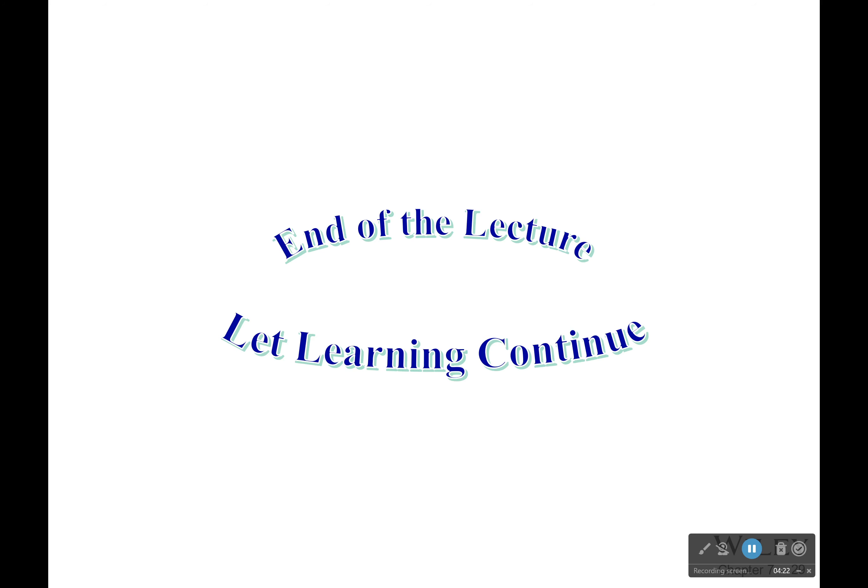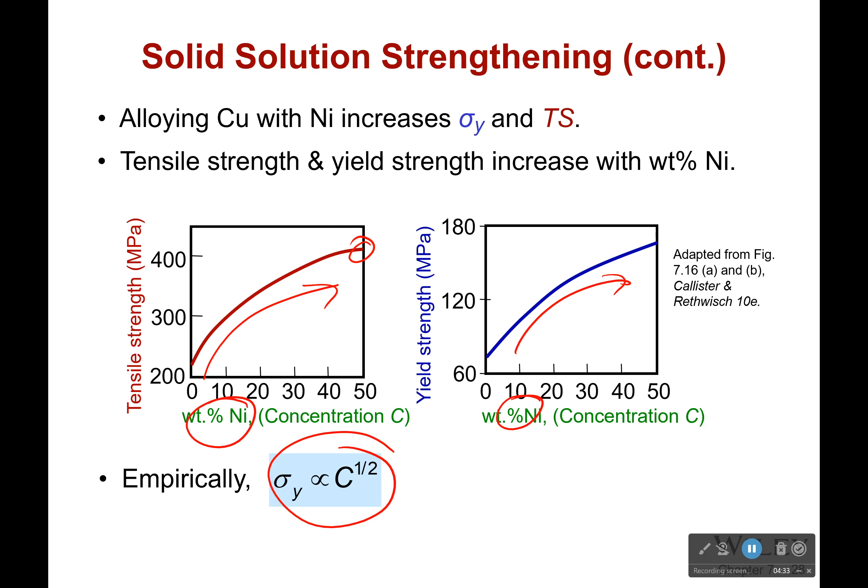I hope you realize that what we learned today is that by alloying different metals, we can increase their tensile strength and the yield stress required to cause them to dislocate.